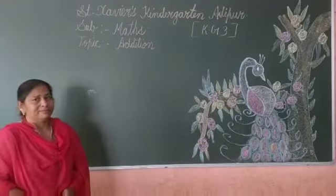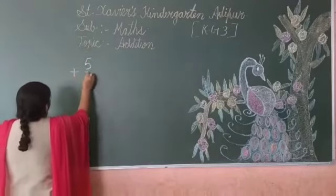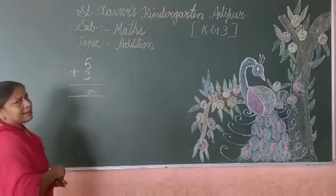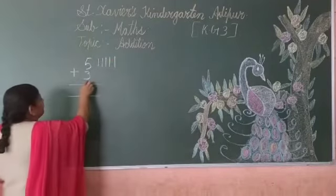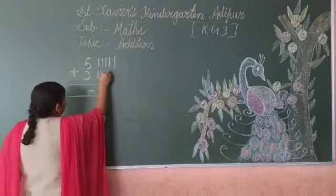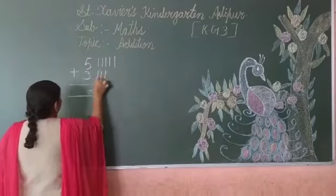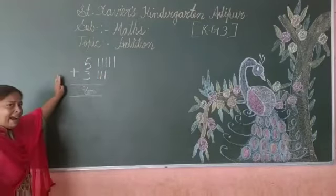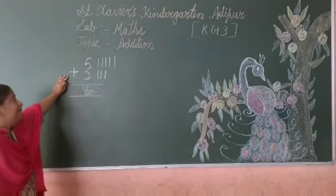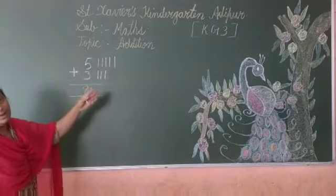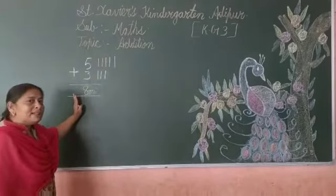And what is the meaning of addition? Jihaan — add karna, yaane jyada karna. So here 5 plus 3. How will you add? Here you have 5, so you have to draw 5 lines: 1, 2, 3, 4, 5. Now the bottom number is 3, so draw 3 lines. Now you have to add all of them: 1, 2, 3, 4, 5, 6, 7, 8. So 5 plus 3 equals 8. The plus sign is the addition sign. When you see this sign, you have to make the numbers bigger. Count the top number and the bottom number together, and whatever number you get, write it below.